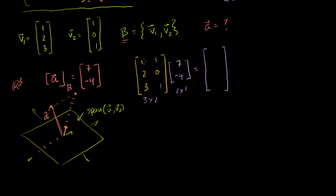In standard coordinates, the first entry is 1 times 7 plus 1 times minus 4, which is 3. Then 2 times 7 plus 0 times minus 4, which is 14. Then 3 times 7 plus 1 times minus 4: 21 minus 4 is 17. So A is the vector (3, 14, 17).